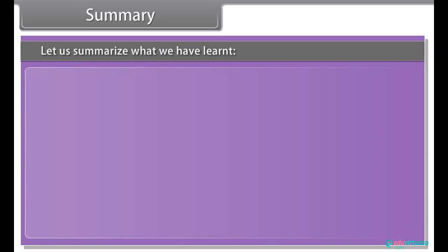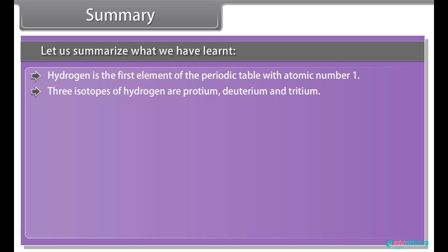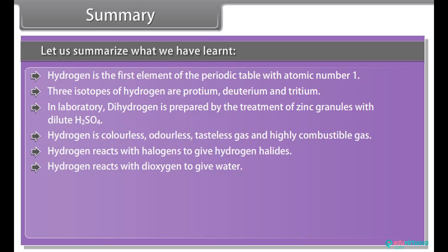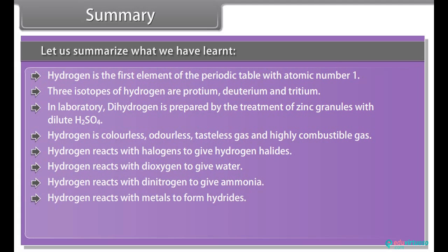Summary: Let us summarize what we have learned. Hydrogen is the first element of the periodic table with atomic number 1. Three isotopes of hydrogen are Proteum, deuterium and tritium. In laboratory, dihydrogen is prepared by the treatment of zinc granules with dilute sulfuric acid. Hydrogen is colorless, odorless, tasteless gas and highly combustible gas. Hydrogen reacts with halogens to give hydrogen halides. Hydrogen reacts with di-oxygen to give water. Hydrogen reacts with di-nitrogen to give ammonia. Hydrogen reacts with metals to form hydrides. Hydrogen reacts with metal ions and metal oxides to give corresponding metal.